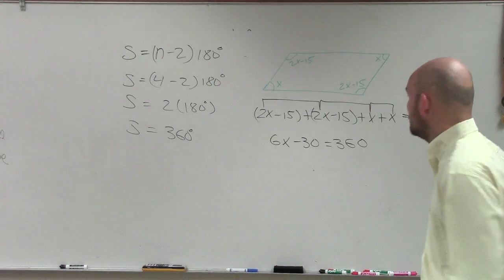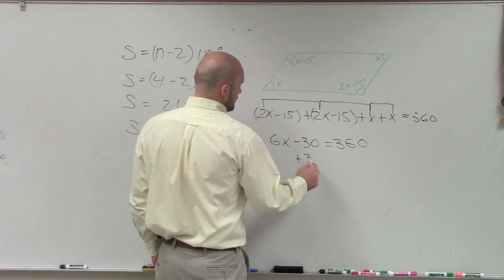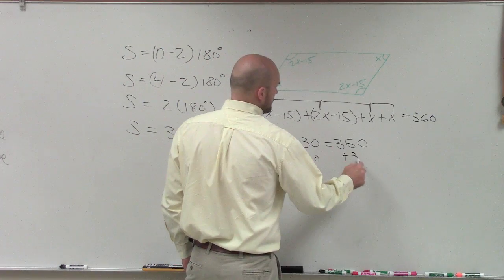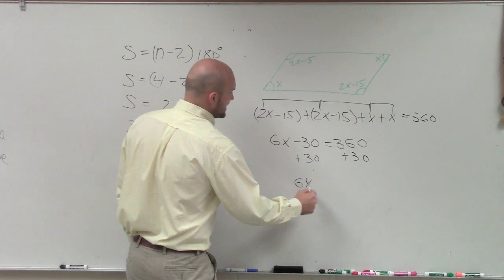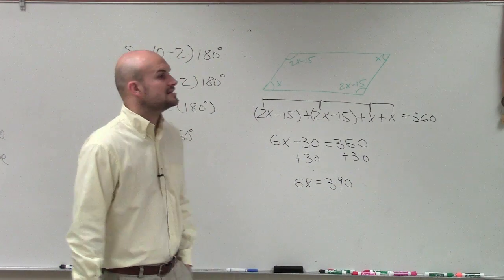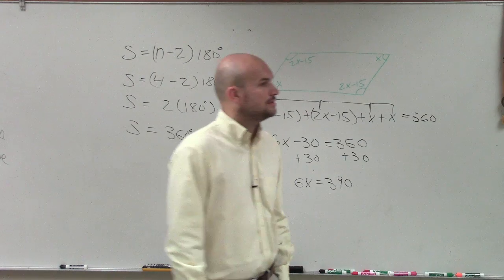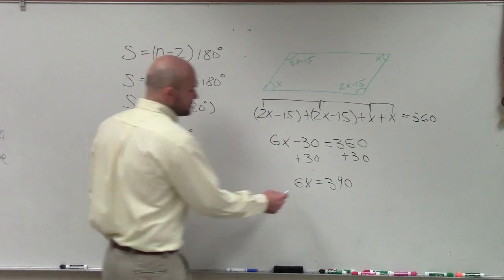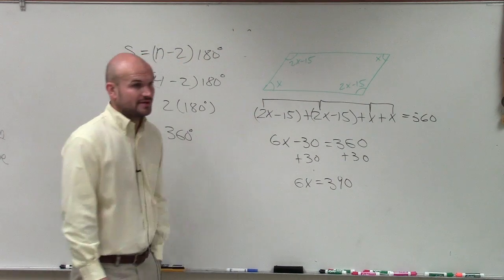Now, what I'll do is I'll add 30, and I have 6x equals 390. So then we have 6x equals 390.